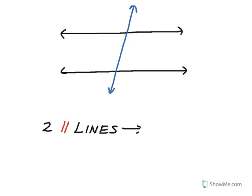And then a third property is that same side interior angles, so like this angle and this angle, different measures, but those two angles always add to 180 degrees.